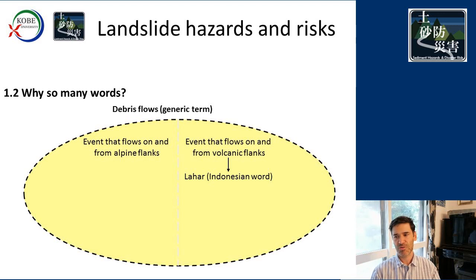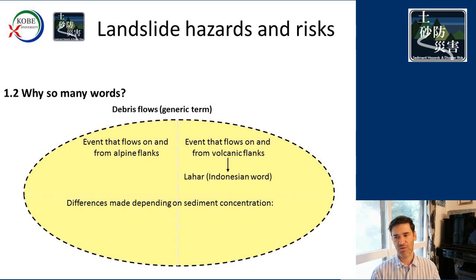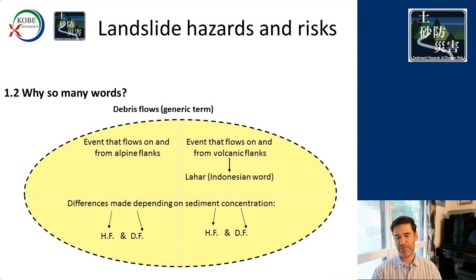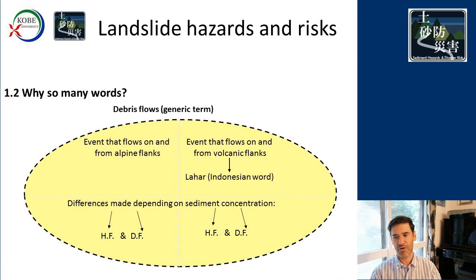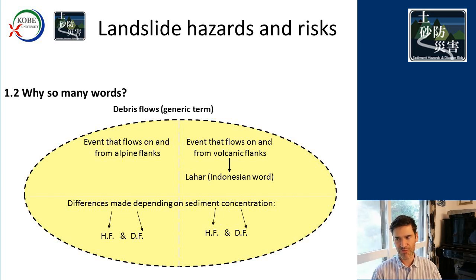Once we have that difference, we make further distinctions based on sediment concentration — hyperconcentrated flow (HF) or debris flow (DF). HF or DF can occur both on volcanoes and in the mountains. So you can have a debris flow with a hyperconcentrated flow phase or a debris flow phase, and you can have a lahar with a hyperconcentrated flow phase and a debris flow phase.